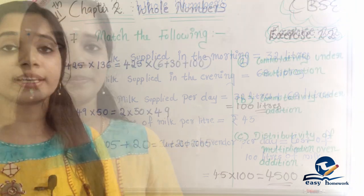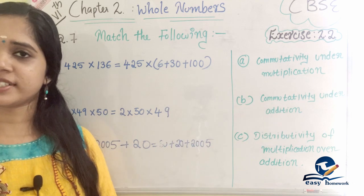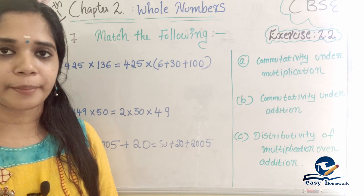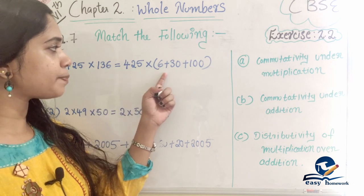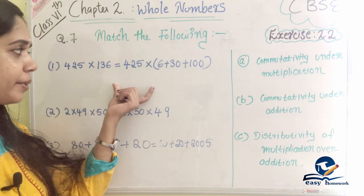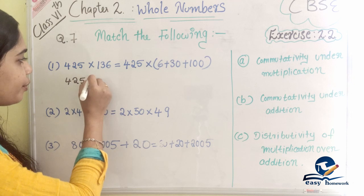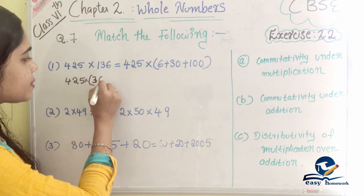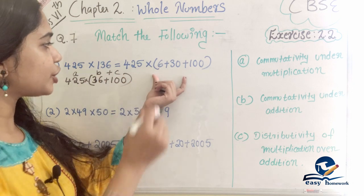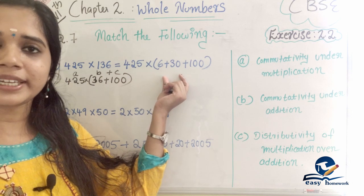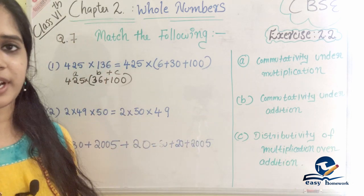Let's check question 7 — the last question in exercise 2.2: match the following. First statement: 425 into 136 equals 425 into (6 plus 30 plus 100). What is this property? Distributivity property. Using the formula a into (b plus c) equals ab plus ac, where 6 plus 30 plus 100 equals 136. This is distributivity of multiplication over addition.